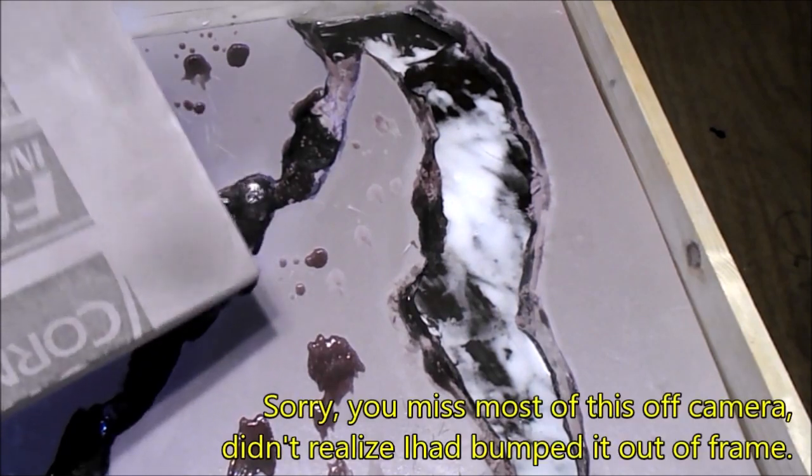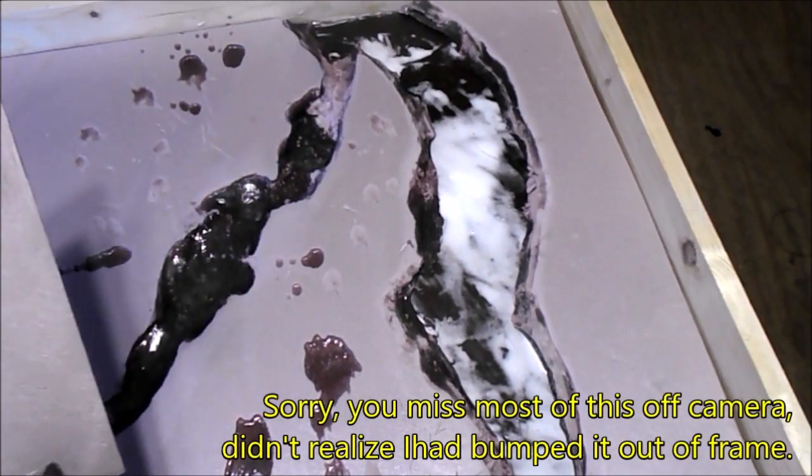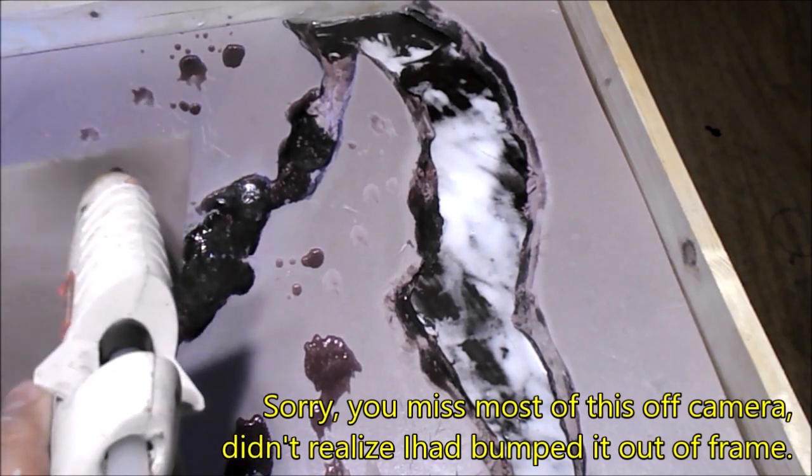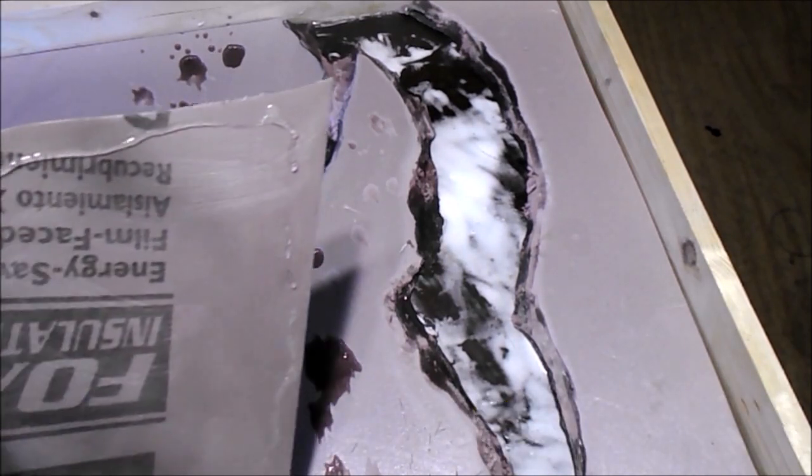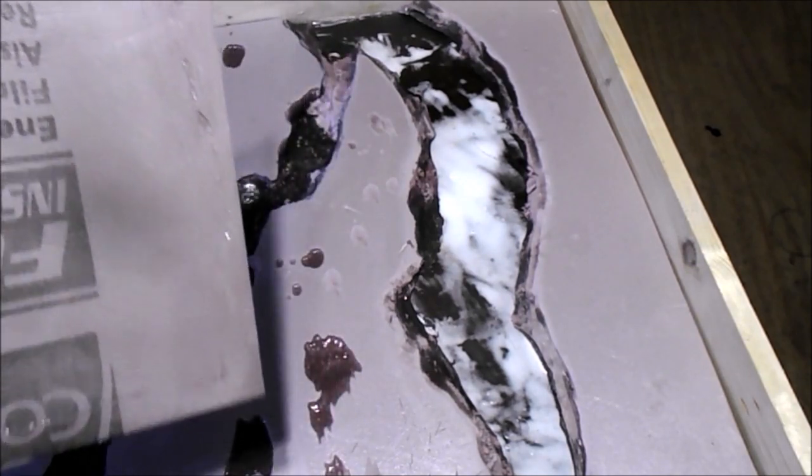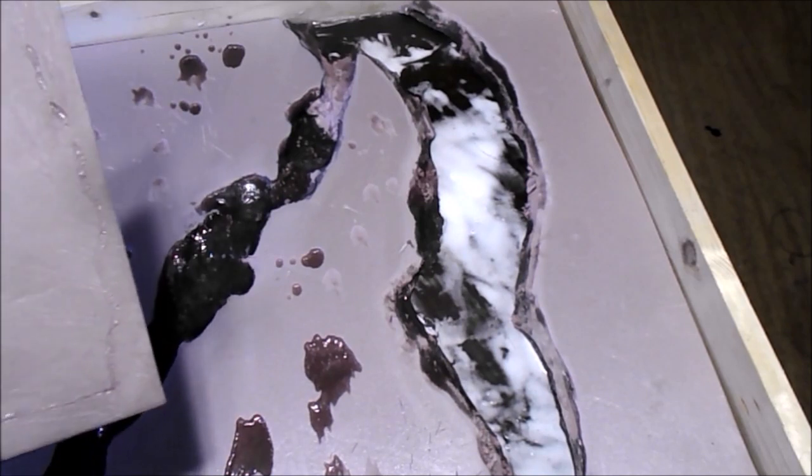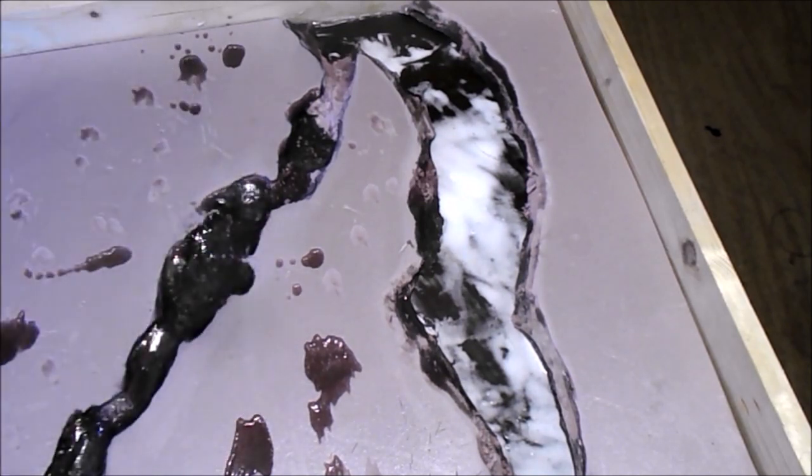Now, we're just going to take some hot glue, run a bead all the way around and put a glob in the middle as well. Pick a corner and put it in place.